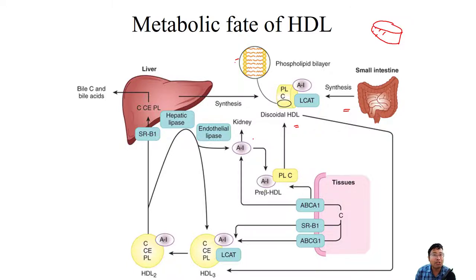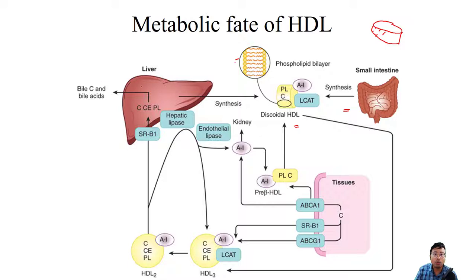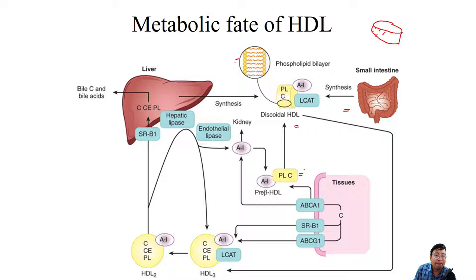When we discussed chylomicron, IDL, LDL, and VLDL formation from liver or intestine, we saw that HDL was donating ApoA protein to them. Now, who donates components to HDL? The core material — phospholipid and cholesterol — comes from extra-hepatic tissue, or it can come from another form of HDL known as pre-beta HDL.